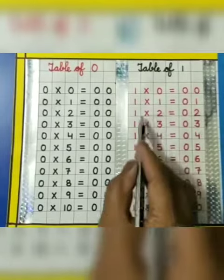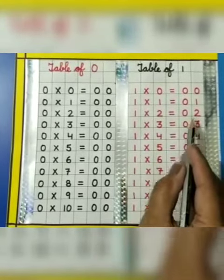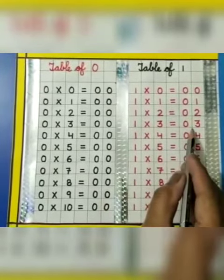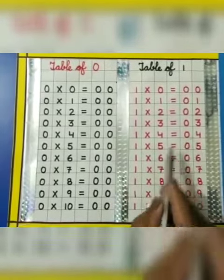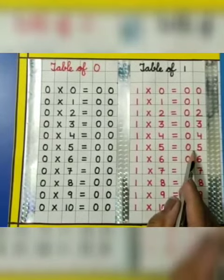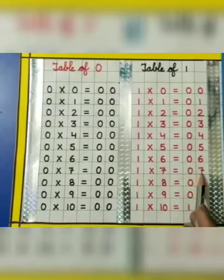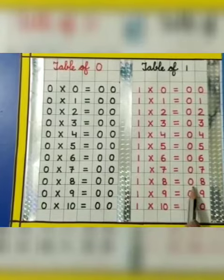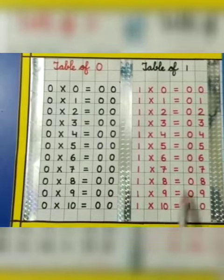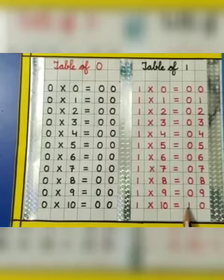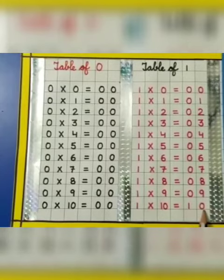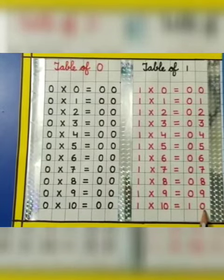1 0s are 0, 1 1s are 1, 1 2s are 2, 1 3s are 3, 1 4s are 4, 1 5s are 5, 1 6s are 6, 1 7s are 7, 1 8s are 8, 1 9s are 9, 1 10s are 10. Now let's revise it again.